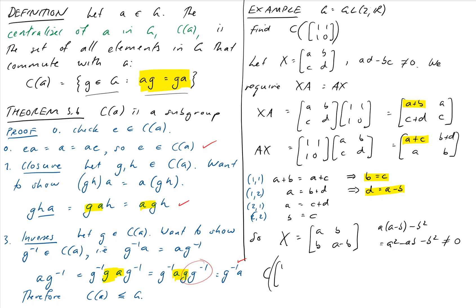So we could write that just to be complete. Centralizer of our element is the set of all matrices A, B, B, A minus B subject to the constraint A squared minus AB minus B squared is non-zero. And that, as we've proven on the left there, is a subgroup of GL2R.